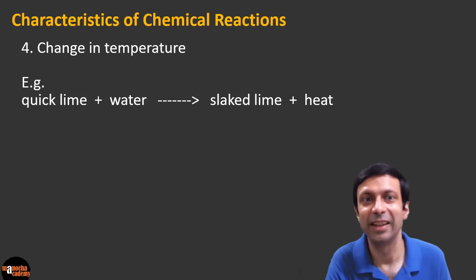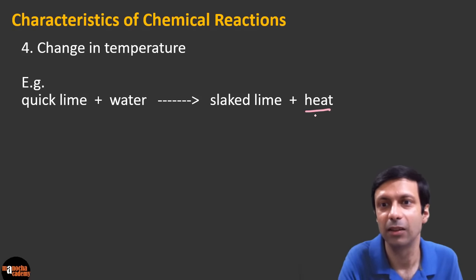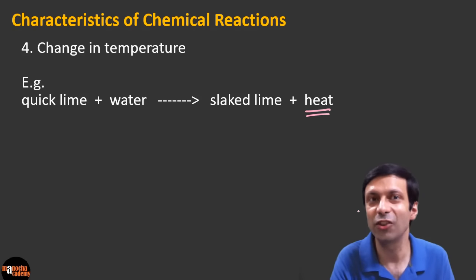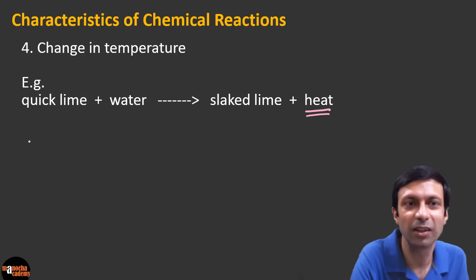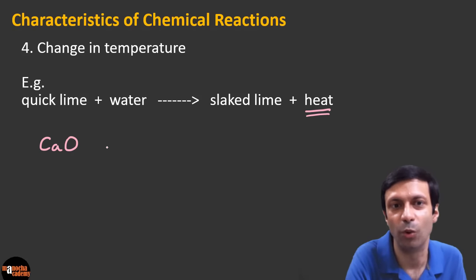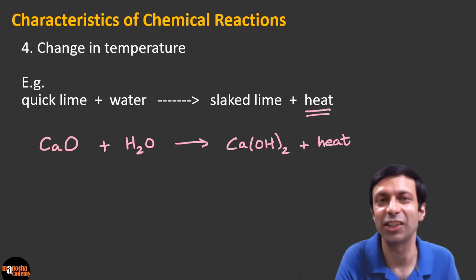Here's the fourth characteristic: change in temperature. When quicklime reacts with water, it produces slaked lime and heat — the temperature increases. So the characteristic is change in temperature. Quicklime is calcium oxide (CaO), and it reacts with water to produce calcium hydroxide (slaked lime), and heat is produced in the reaction.